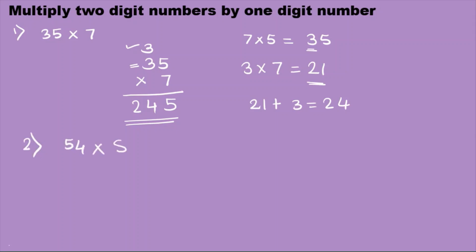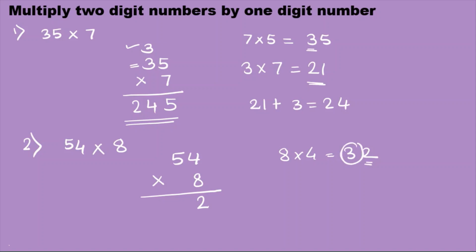Next example: 54 times 8. We write the largest number first, which is 54, and then the smaller number 8 below it, placed below the ones place in 54. Now, 8 times 4 is 32. I will write 2 in the units place and carry the 3 in the tens place.